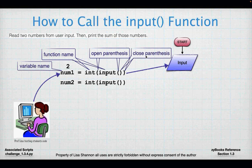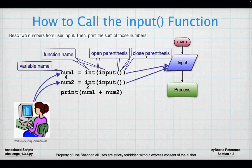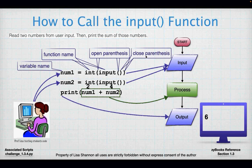num2 looks very much like num1 — int as the outer function and input as the inner function. My process is going to be num1 plus num2, and print is the output. So input is getting the numbers, num1 plus num2 is the process, and print is the output — giving us 6.